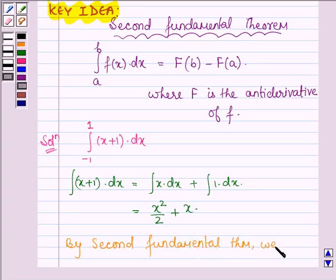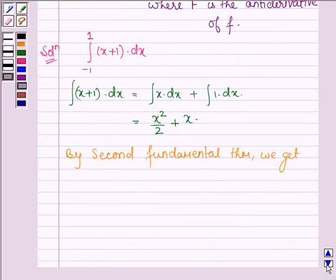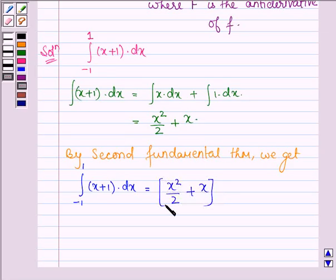We get integral minus 1 to 1 of x plus 1 dx equals x squared upon 2 plus x evaluated from minus 1 to 1.